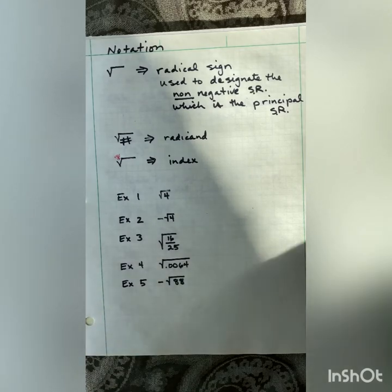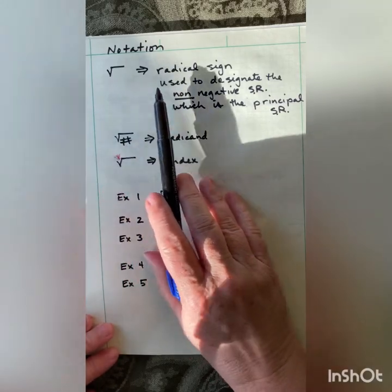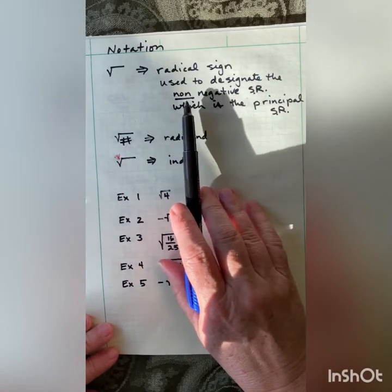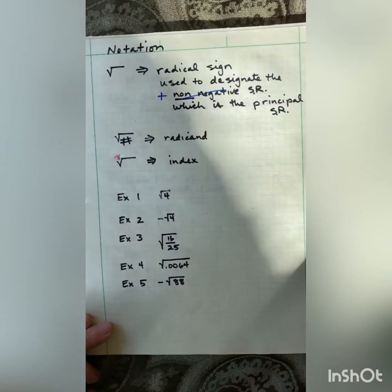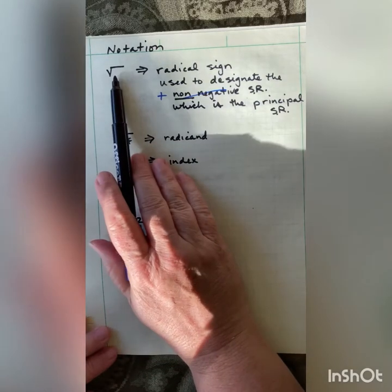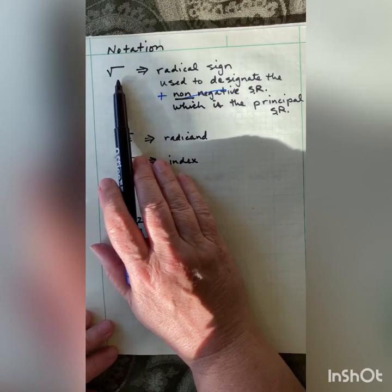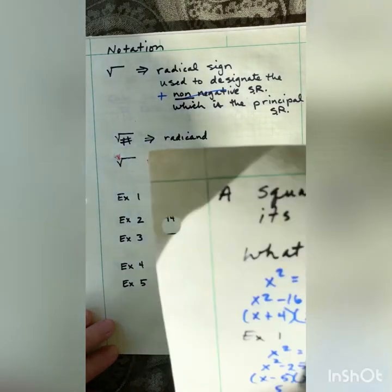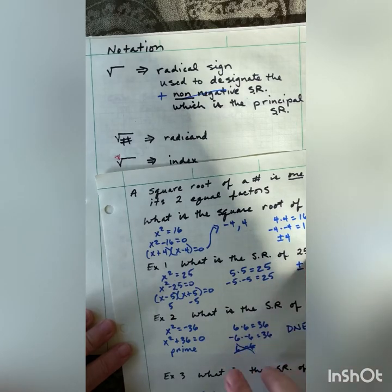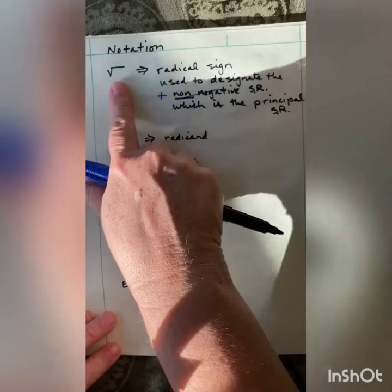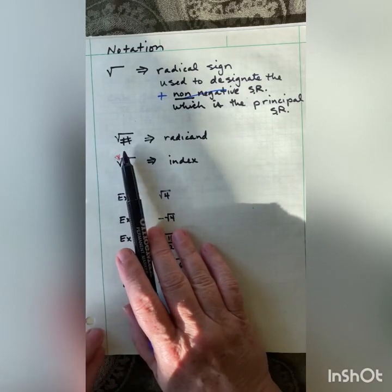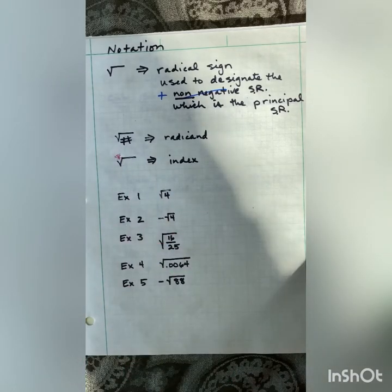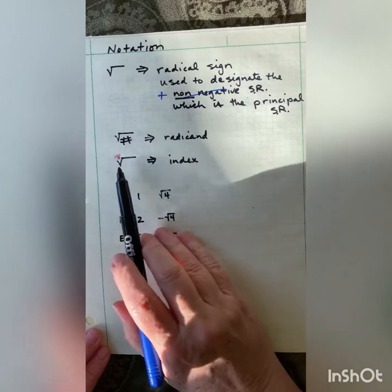Now we need to do a little bit of notation. This is the radical sign, and it is used to designate the non-negative square root — that's a positive. So we can think of that as the positive square root, and this is the principal square root. When I use this sign, my answer is always going to be just the positive part. It can be plus or minus if written out, but with this notation it is only the positive part. The number under the radical is the radicand, and the index is the little number there.